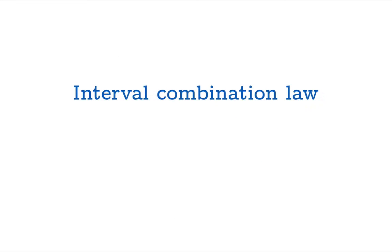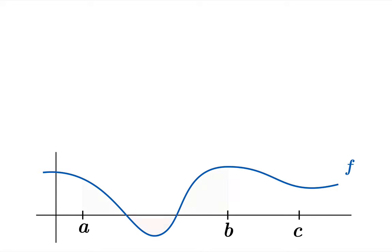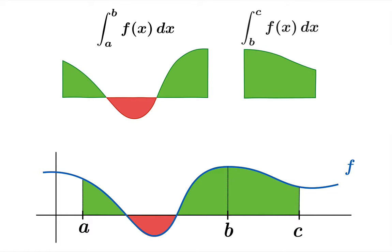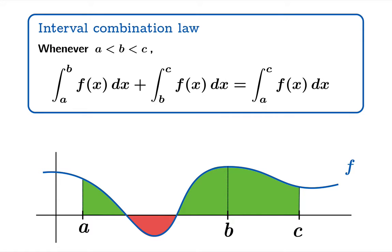First, let's look at something we might call the interval combination law. Suppose we have a function and A is less than B is less than C. We might be interested in the definite integral on the interval from A to B and the definite integral on the interval from B to C. If we add these two integrals, it becomes pretty obvious, at least graphically, that the result should yield the definite integral from A to C. It seems reasonable to call this the interval combination law: if you have two successive intervals and add the definite integrals on both, the result should be the definite integral on the larger interval.